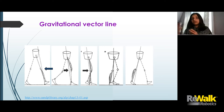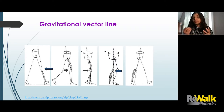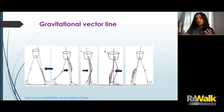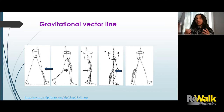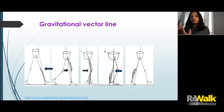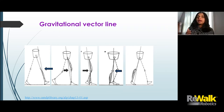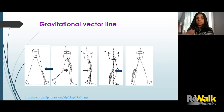As we move into terminal stance and pre-swing, body weight shifts forward and the gravitational vector line moves almost to the forefoot, generating gastroc power, causing knee extension, and still behind the hip joint to help with hip extension. Returning to the parcel analogy — if the trunk and upper extremities are not free-flowing and moving synchronized with the lower extremity, the gravitational vector line cannot work at its optimum, throwing off the entire gait cycle. Paying close attention to how this gravitational vector line is moving is really important when doing observational gait analysis and designing treatments.